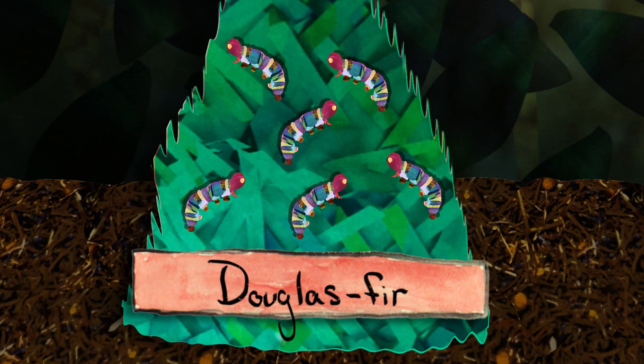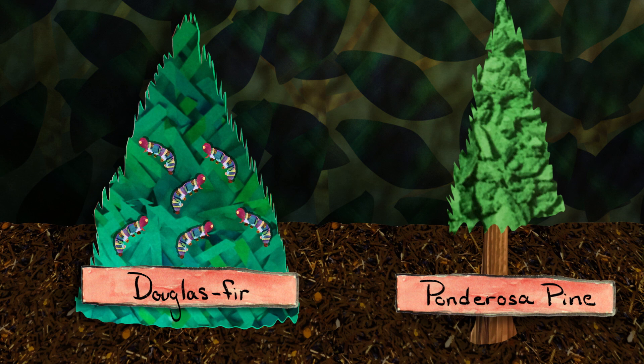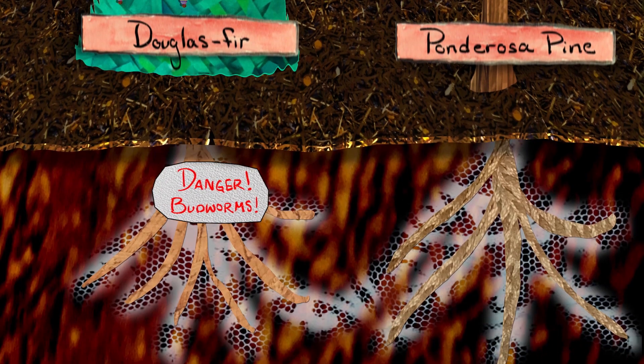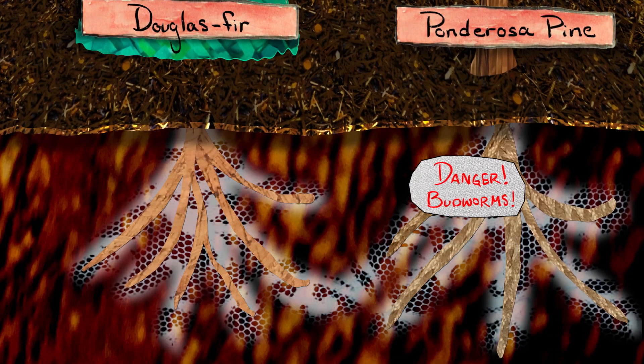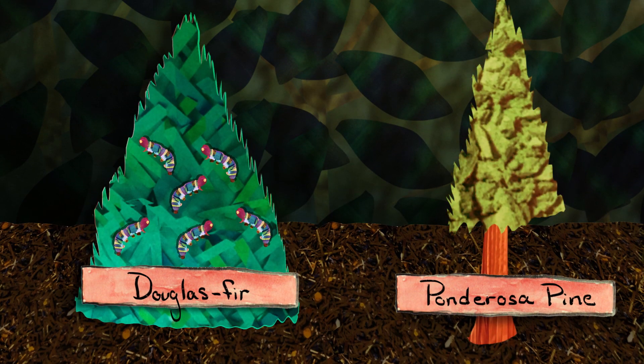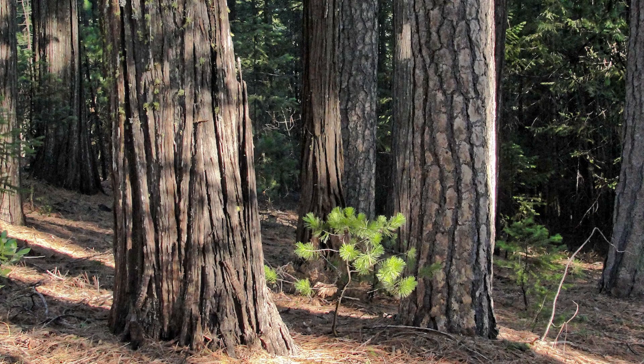Plants can also warn each other of danger. Douglas fir trees connected by a fungal network can alert their ponderosa pine neighbors if they're attacked by budworms. In response, the ponderosa pine trees will produce insect-repelling chemicals, even though they haven't been directly exposed to the insects themselves. Mycorrhizal fungi can also enable parental care among plants — some adult trees will help out their younger relatives by sending those seedlings more nutrients through the fungal network than they send to strangers. The adults may even make more room for them in the soil by reducing the number of their own roots.